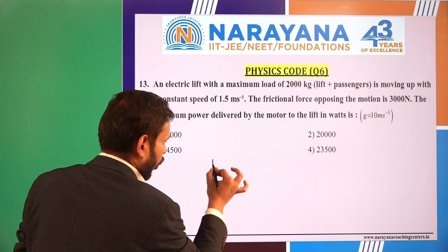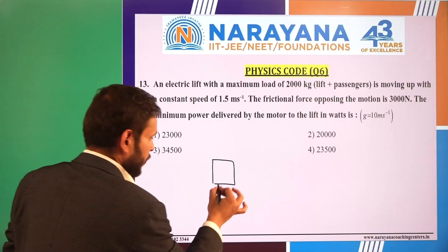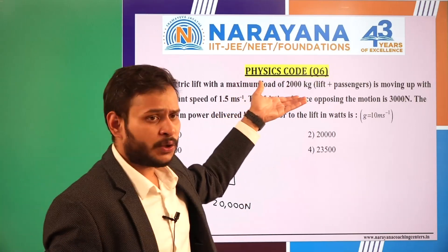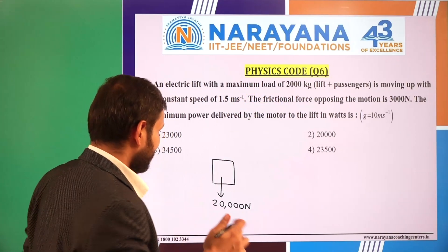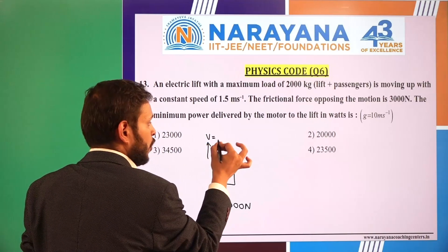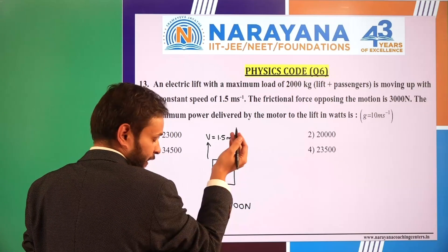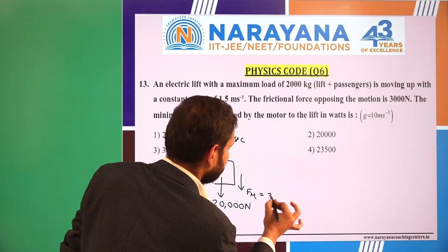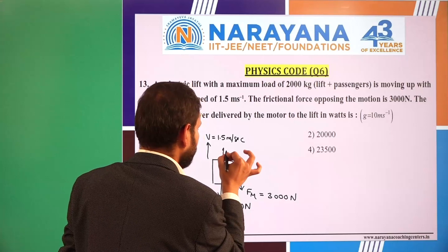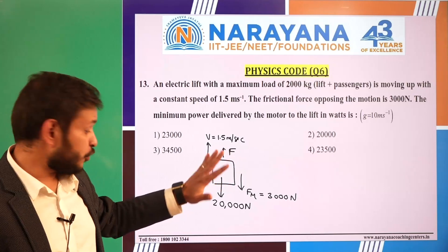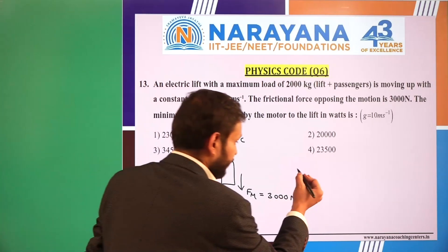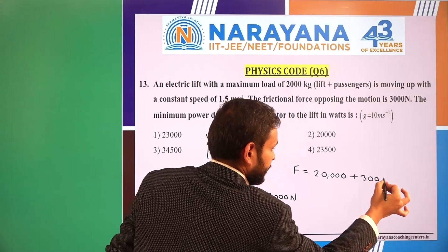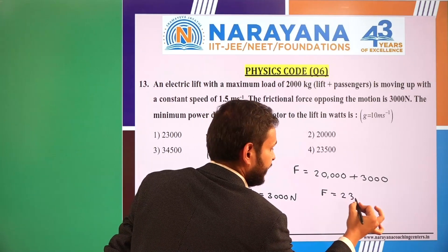Drawing the free body diagram for the lift: there will be a downward force of 20,000 N because mass is 2000 kg multiplied by g = 10. The lift is moving up with constant velocity of 1.5 m/s, so there is also a downward frictional force of 3000 N. Since the lift moves at constant velocity, F_net = 0, so the upward force F applied by the lift is 20,000 + 3000 = 23,000 N.